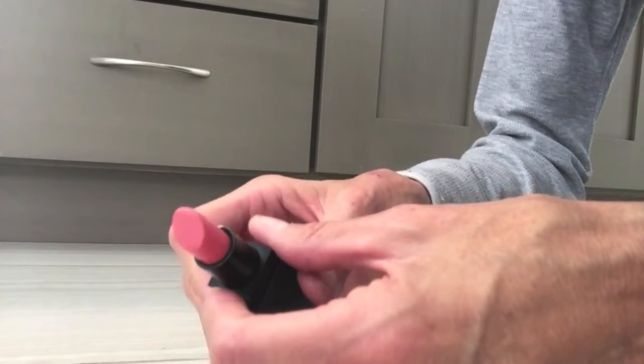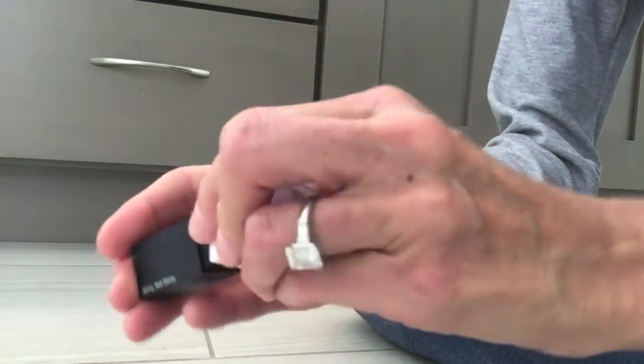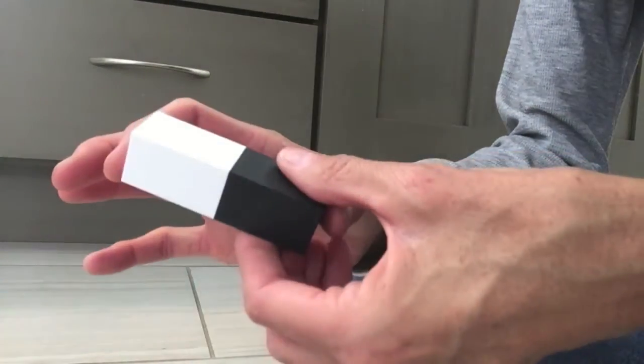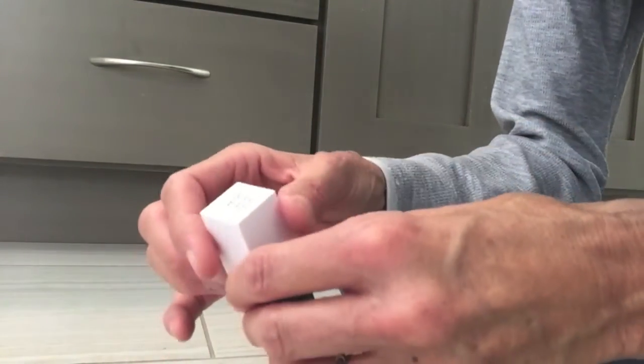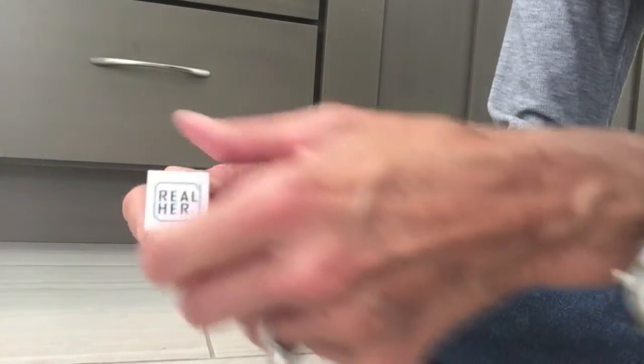So I thought that was really kind of a great thing to do. But again, it was sent to me by Octoly. This is the packaging, kind of a minimal looking packaging, but I kind of like it. It looks kind of futuristic. And the name of the lipstick company is right here.